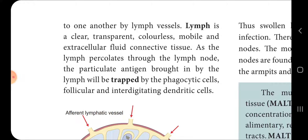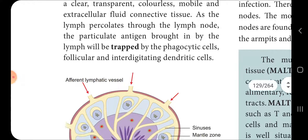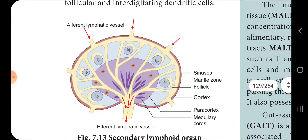Antigens are also trapped by follicular and interdigitating dendritic cells. Observe the diagram: afferent lymphoid vessels, mantle zone, follicle, cortex, paracortex area, and medullary cords.